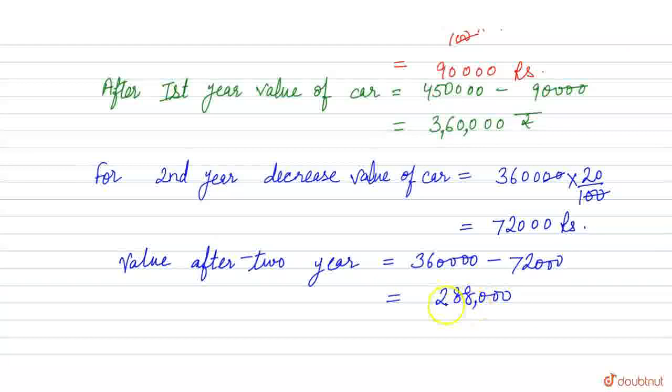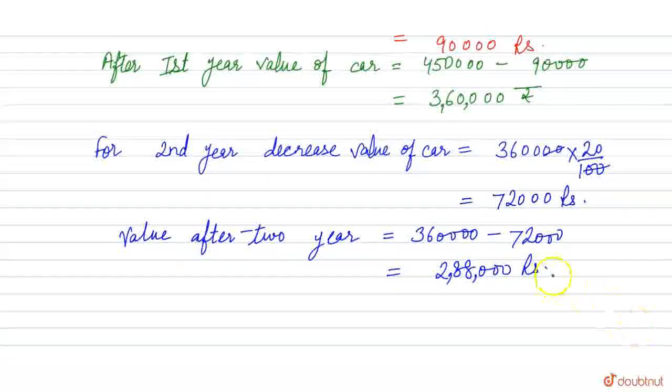This is what we had to find out - if the value of the car decreases by 20% every year, after two years the value will be 288,000. I hope you understand this question. Thank you.